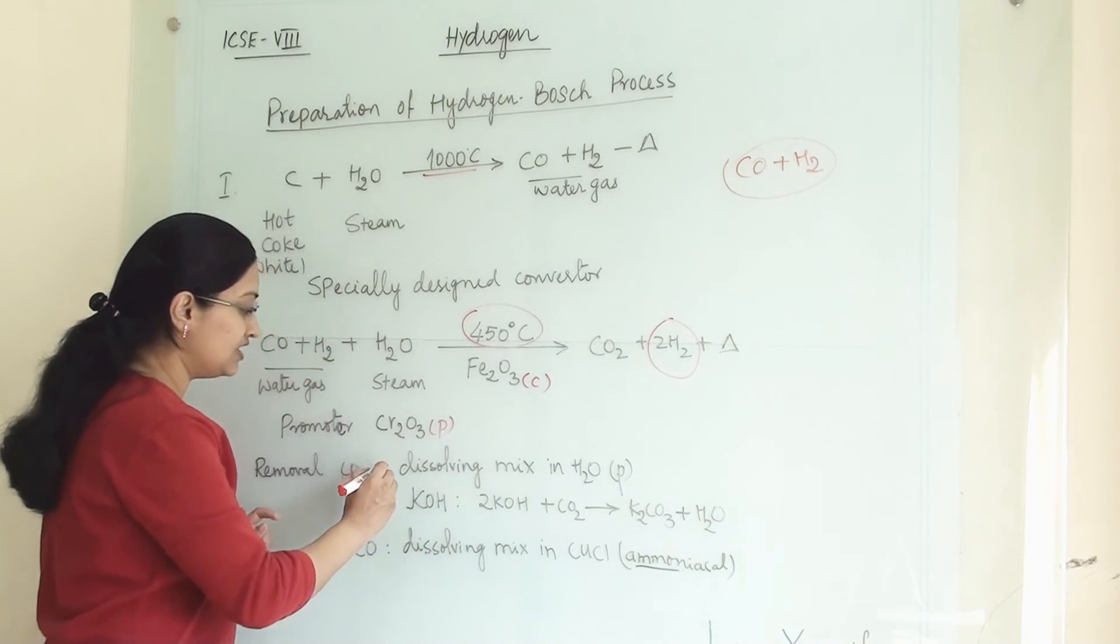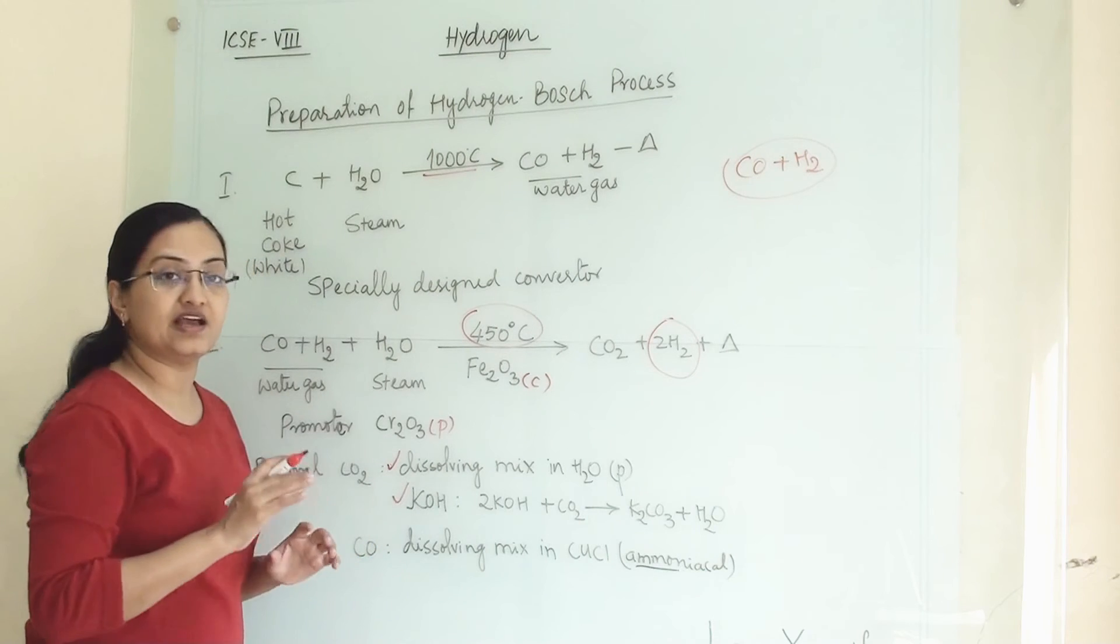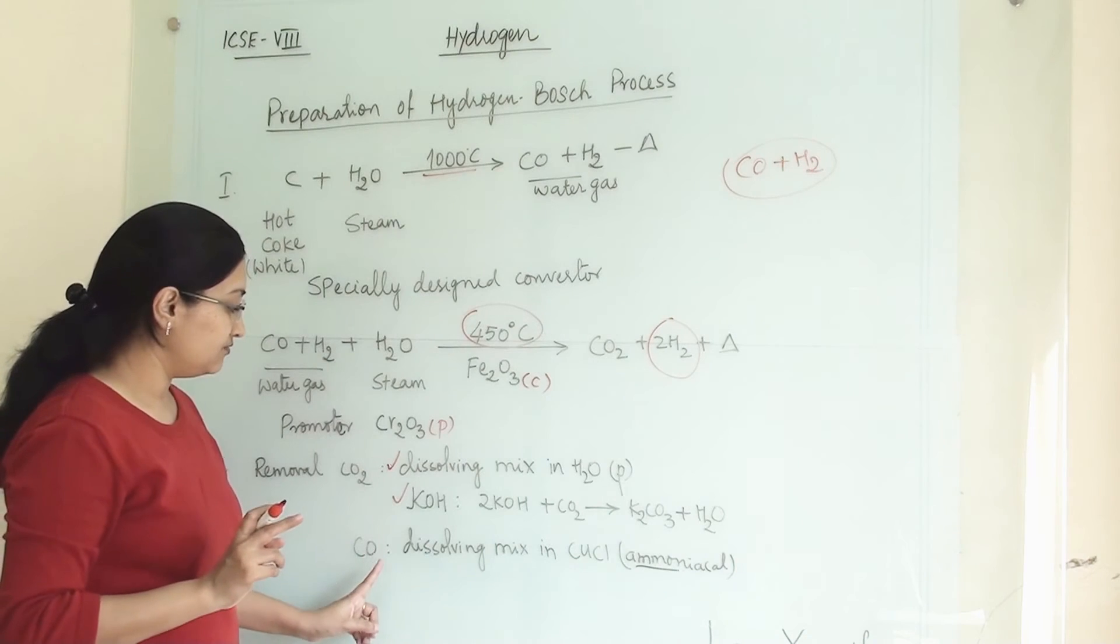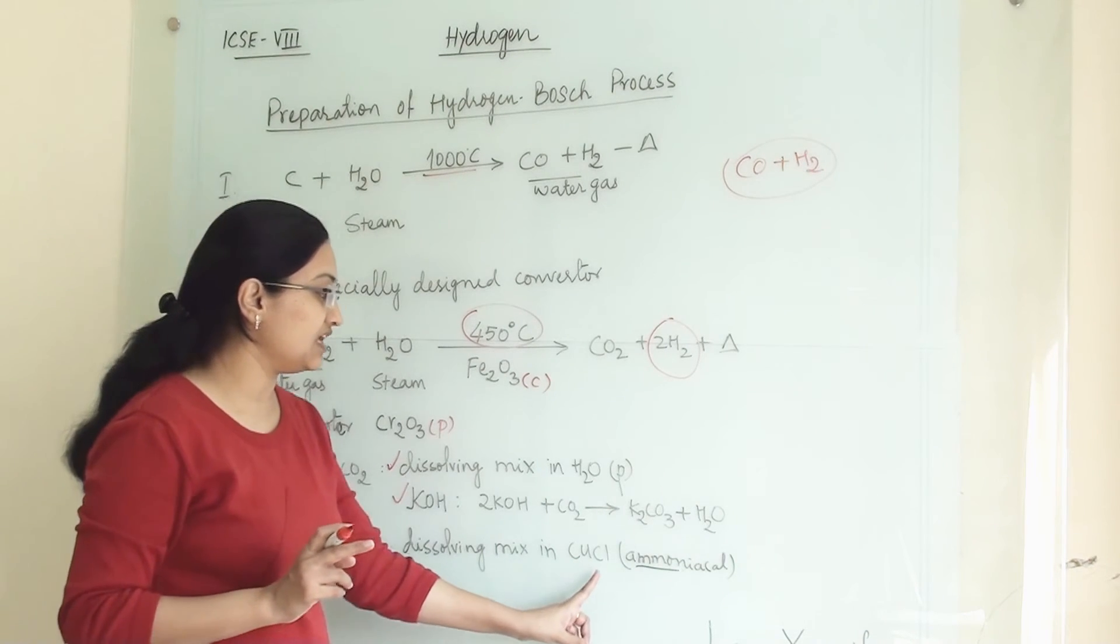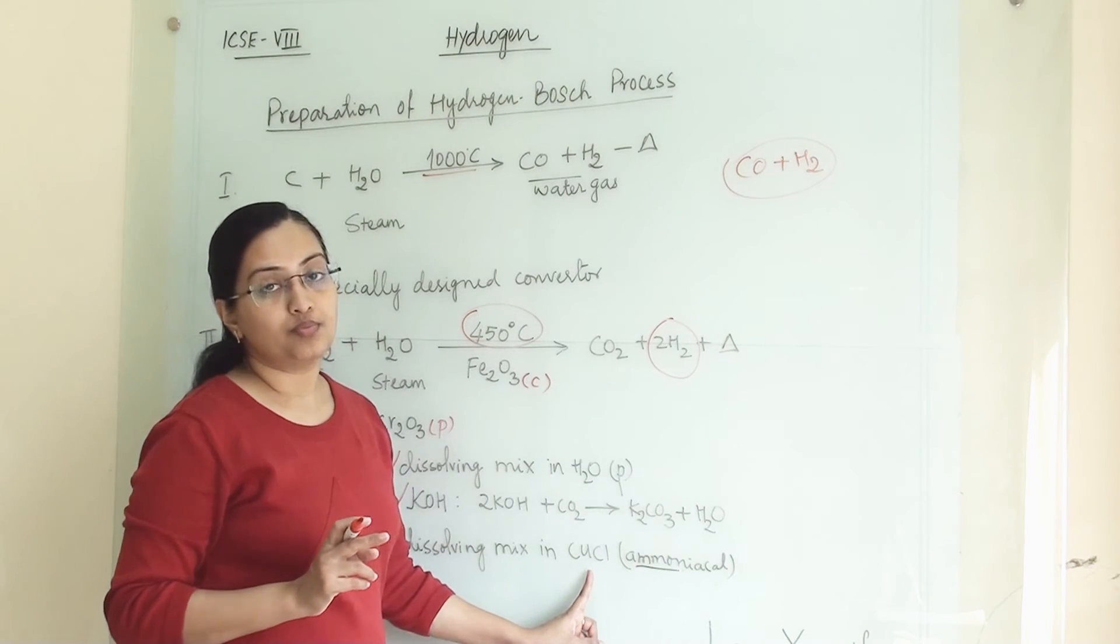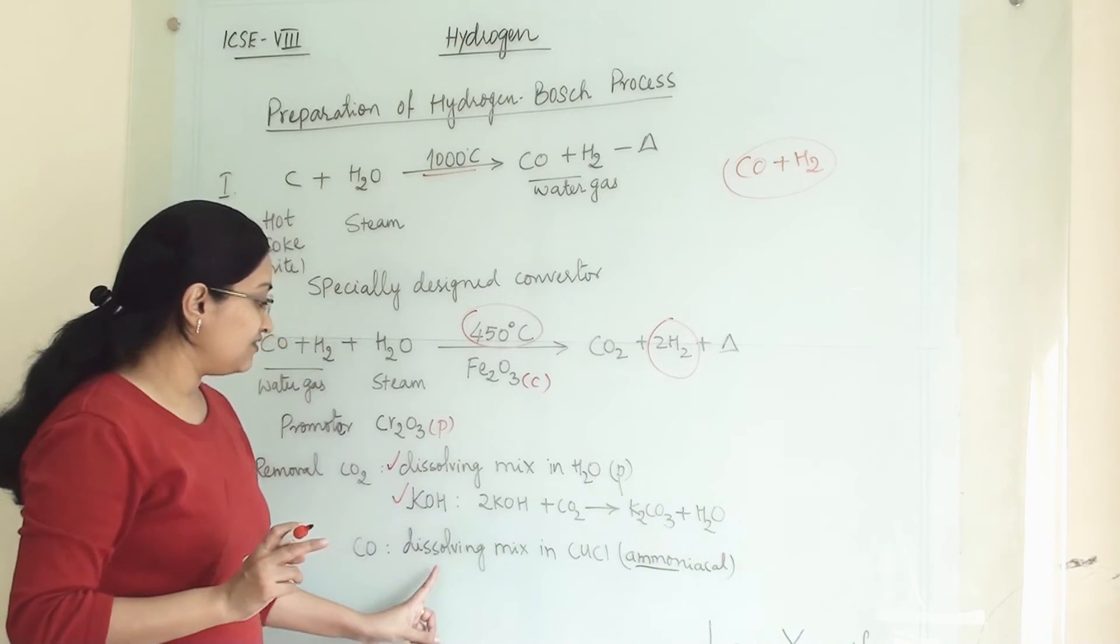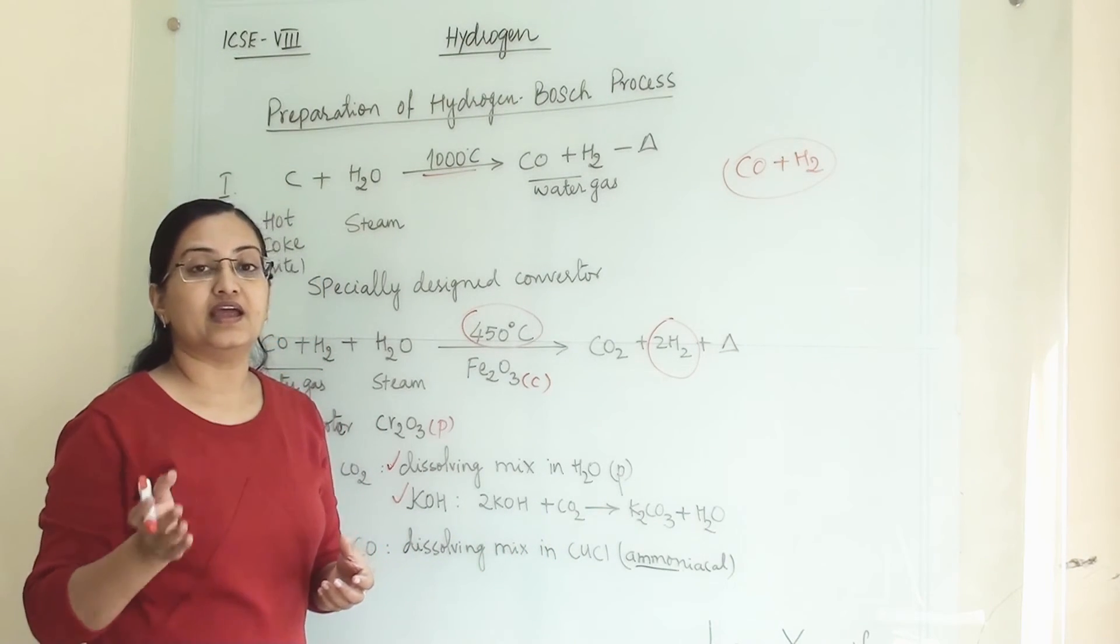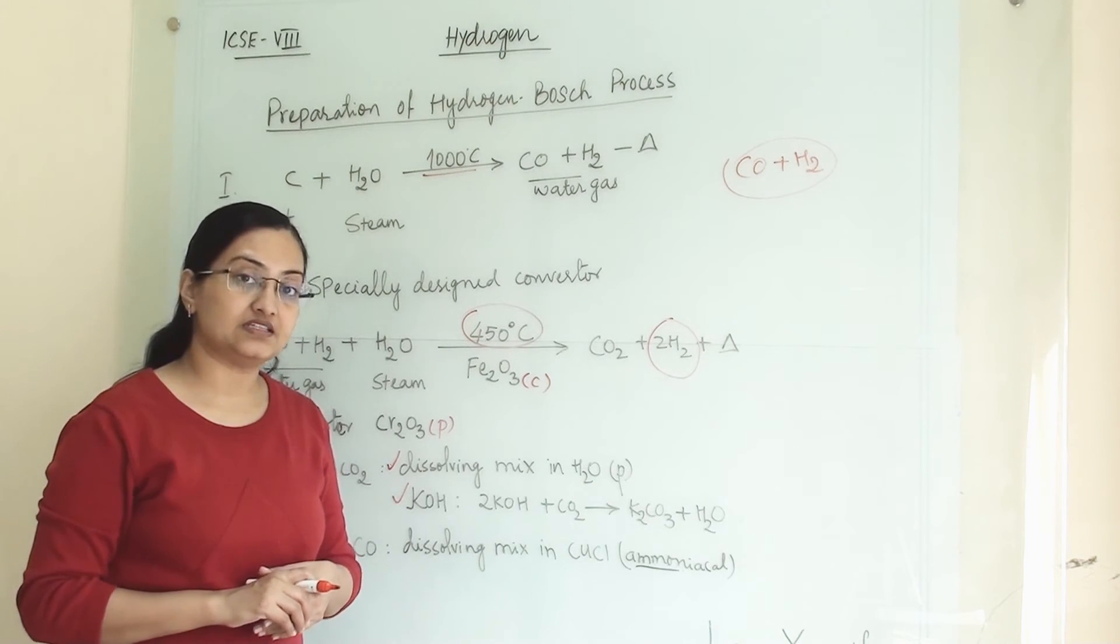So these are two different methods by which we can eliminate carbon dioxide. Now for carbon monoxide, we can dissolve the mixture in ammoniacal copper chloride. When we are dissolving this, carbon monoxide will react with it and our hydrogen gas will remain as it is.